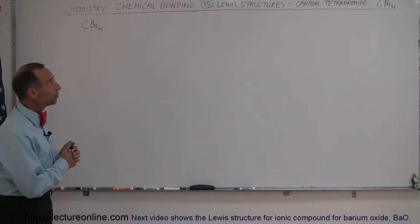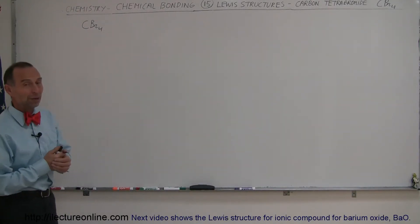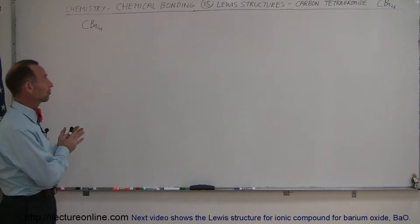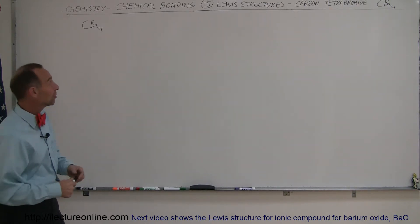And now we're going to take a look at an example for carbon tetrabromide. We're going to come up with the Lewis structure for that. Now, first of all, let's figure out how many valence electrons each of the atoms has.